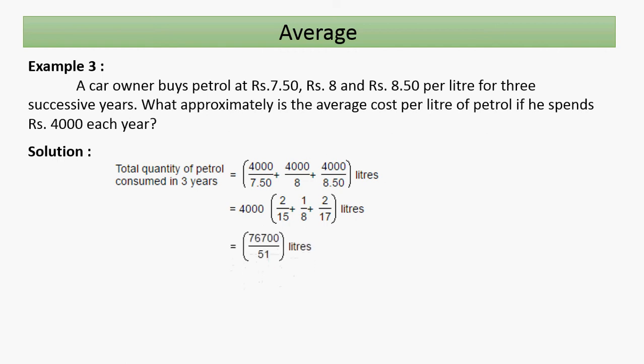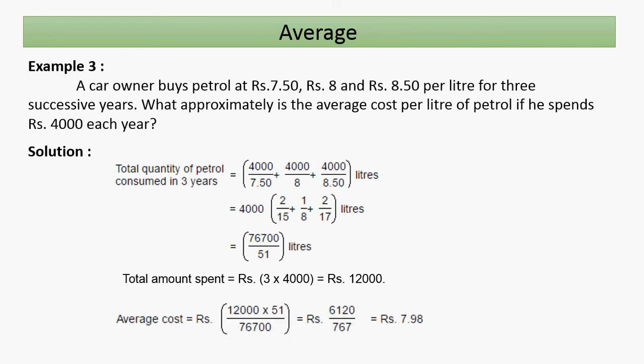The total quantity works out to 4000 × (sum of fractions). Combining, total liters = 7600/51, and total money spent over three years = 3 × 4000 = 12000 rupees. Average cost per liter = 12000 × 51 / 7600, which simplifies to approximately rupees 7.98 per liter.